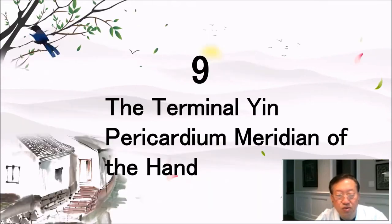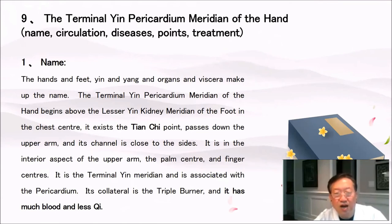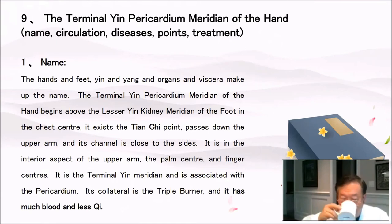Section nine: terminal yin pericardium meridian of the hand. The name is composed of hands and feet, yin and yang, and organs and viscera. The terminal yin pericardium meridian of the hand begins above the lesser yin kidney meridian of the foot in the chest center and exits the tianchi point. It passes down the upper arm close to the sides, in the interior aspect of the upper arm, through the palm center and finger center. It is the terminal yin meridian, associated with the pericardium, its collateral is the triple burner, and it has much blood and less qi.